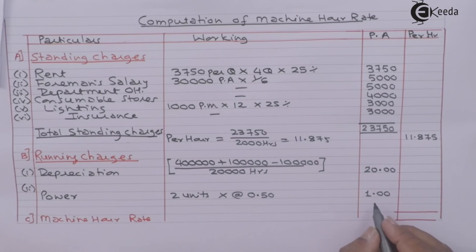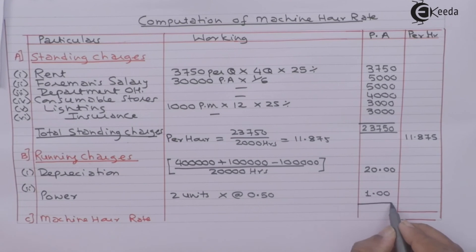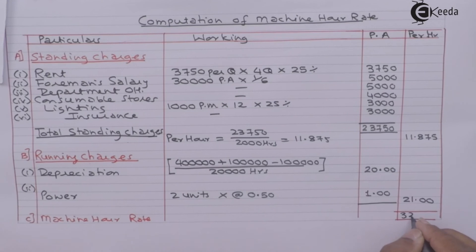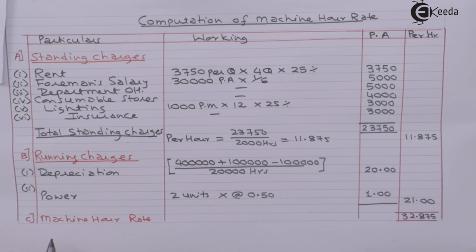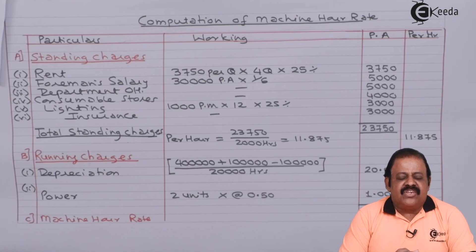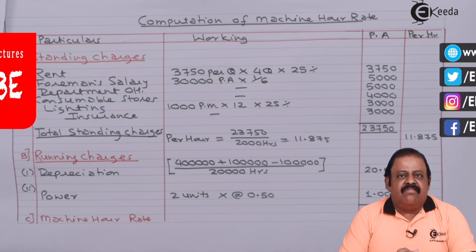Adding the per-hour running charges — depreciation 20 rupees plus power 1 rupee — gives 21 rupees per hour. Adding the standing charges of 11.875 per hour, the total machine hour rate comes to 32 rupees 87.5 paise. In this question we have learned how to calculate depreciation, get machine hours, and arrive at the machine hour rate.